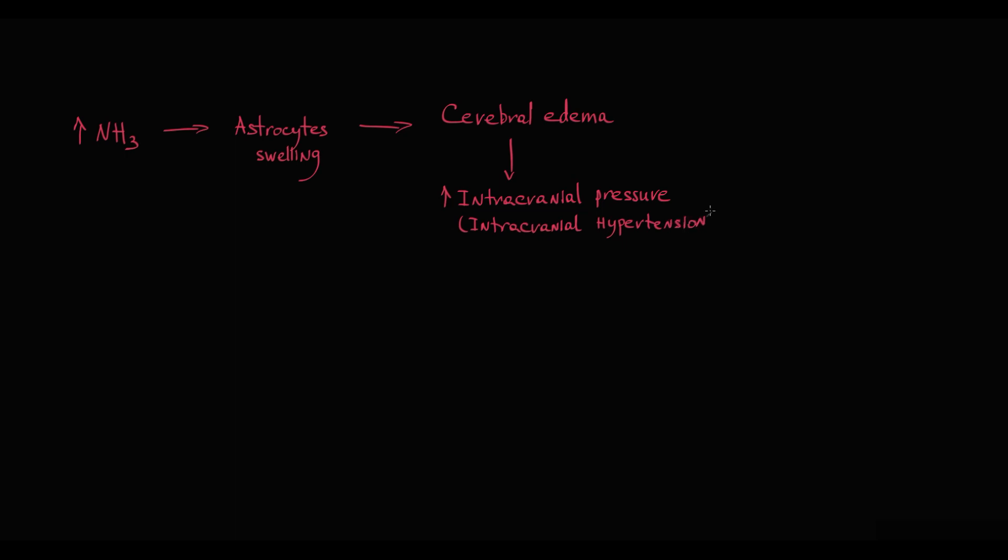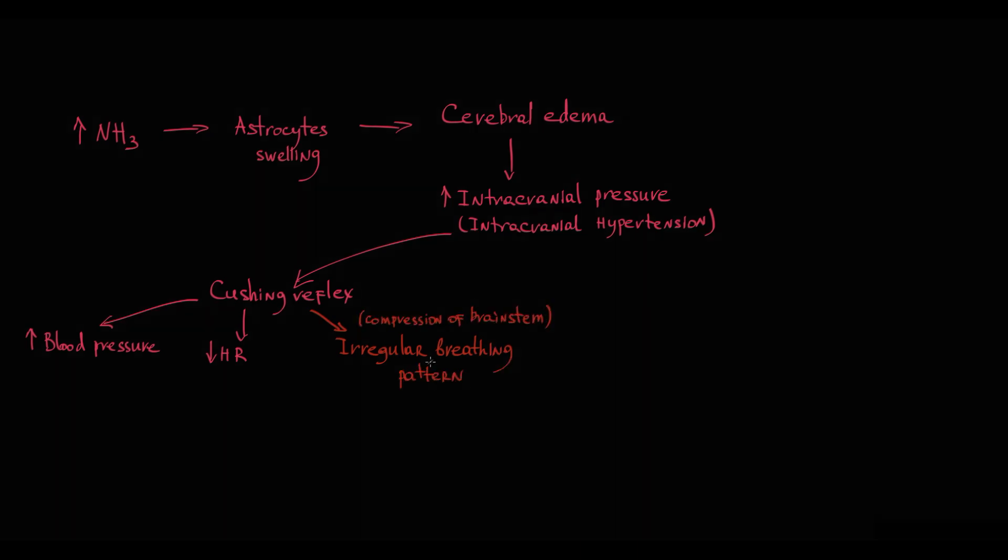Increased intracranial pressure triggers Cushing reflex that results in Cushing triad: increasing blood pressure, bradycardia, and most importantly, irregular breathing pattern. Intracranial pressure compresses brainstem, and in brainstem are located centers that control involuntary breathing. Compression of brainstem disrupts normal function of respiratory centers and breathing.